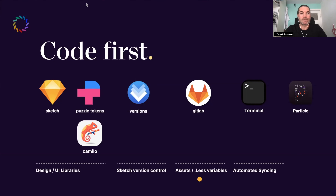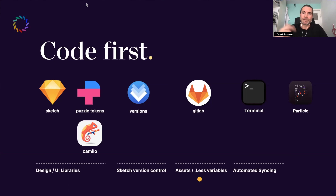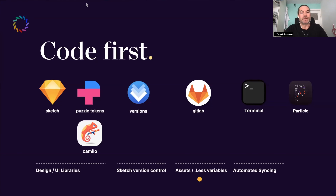But there was a plugin called Puzzle Tokens — you can see it on the left — which interprets SCSS or LESS files, which is kind of a CSS format. That was really interesting for us. The core of what we tried to do was to use code as a base and get that into Sketch, which gave us the opportunity to clone those libraries with different themes on top of them.